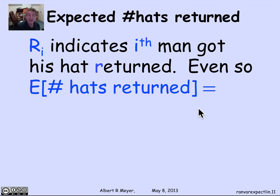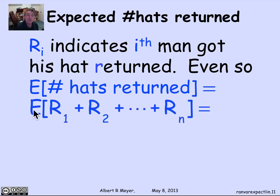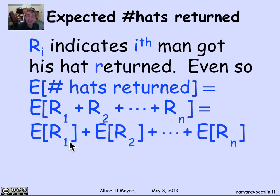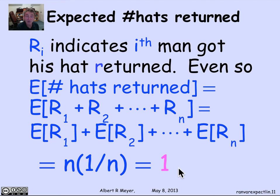Nevertheless, independence doesn't matter for linearity. So I can still say that the expected number of hats returned equals the expectation of the sum of the indicator variables for each man getting his hat back. And the expectation of that sum is the sum of the expectations. Each expectation of r_i is 1/n, and there are n of them, so it's n times 1/n, or 1. We expect exactly one man will get his hat back when all permutations are equally likely.